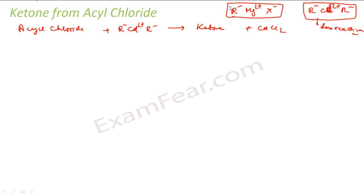RMGX is more reactive. So why are we not using RMGX? Because if I use the Grignard reagent RMGX, it will further react and convert this ketone to an alcohol. We don't want that. So we will use CDR2 — it's less reactive than RMGX. Let's see the reaction first; let's assume that you have CDR2.